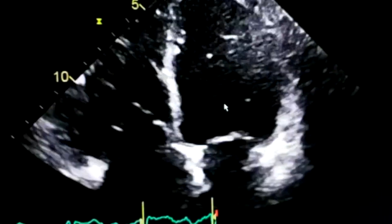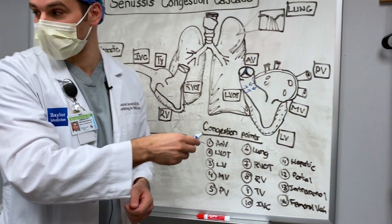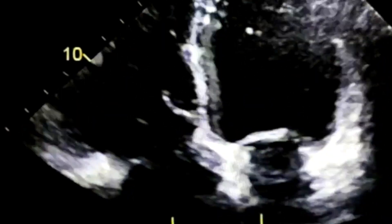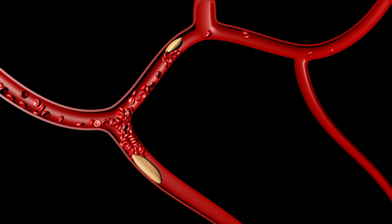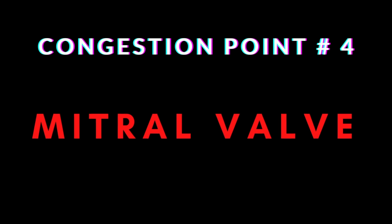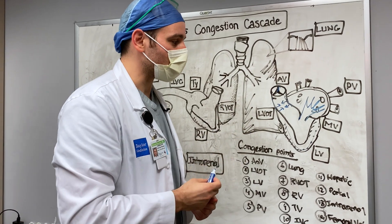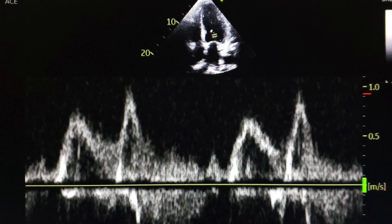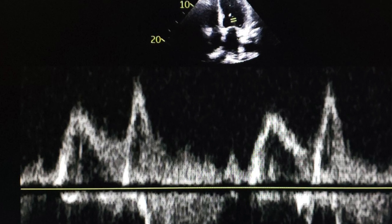Step three: the LV. Assess global LV function — both systolic and diastolic. Global systolic function is familiar to us, but diastolic dysfunction carries more mortality in the ICU. Regional wall motion abnormalities can point toward coronary artery occlusions and change management. Most flow during diastole passes through the mitral valve. Use echocardiography to detect severe MR, and place pulse wave Doppler on the mitral valve inflow leaflets to assess inflow patterns, which provides incredible information about left-sided filling pressures.